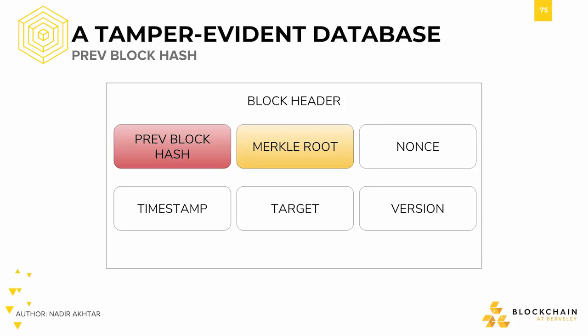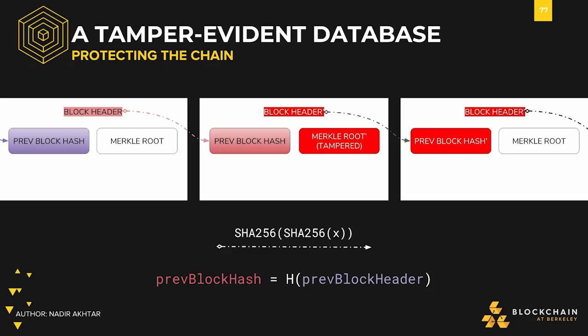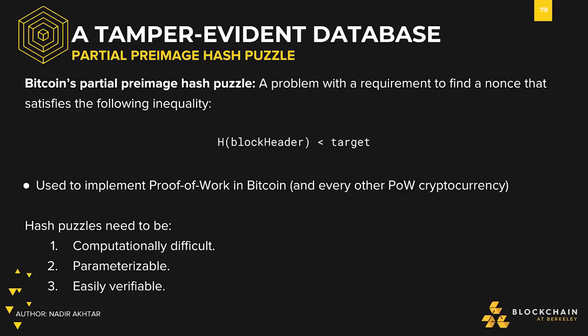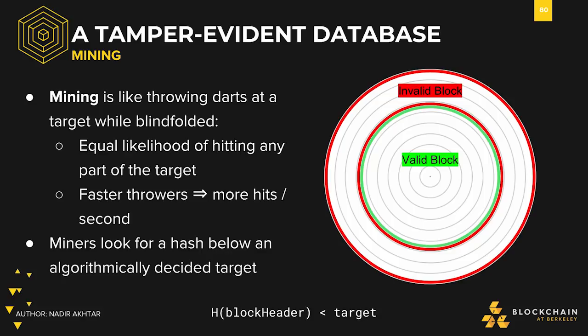Next, we discussed the previous block hash, taking a look at how this makes the blockchain immutable, and showing what happens when anything in the blockchain is mutated. Finally, we looked at the nonce, the implementation of proof-of-work. We showed how mining is like throwing darts at a target while blindfolded — you don't know whether your guess is correct or incorrect; all you can do is try more guesses.